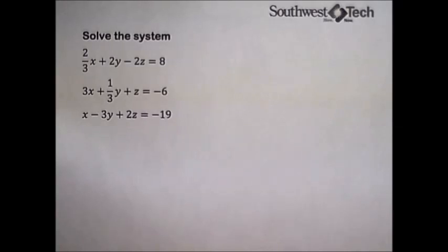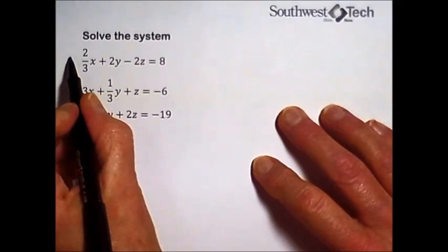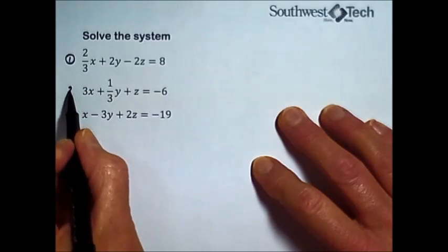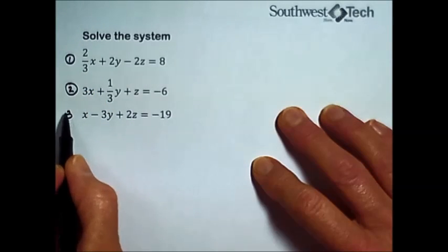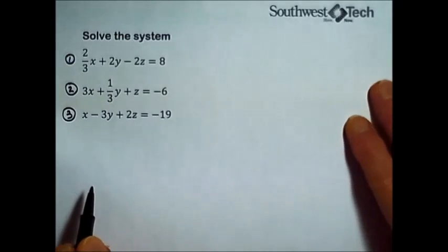If you have coefficients that are fractions or rational numbers, that would be the next thing you'd want to take care of, clearing any decimals or fractions. So just to keep reference, I'm going to number these so we can keep track of what equations we're talking about.